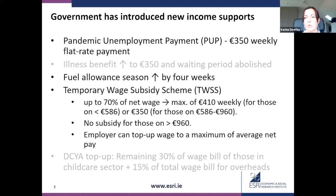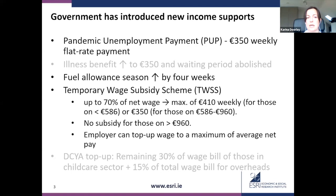The pandemic unemployment payment was introduced — a flat rate payment of around 350 euros per week to all those made unemployed directly as a result of the COVID-19 crisis. This flat payment of 350 euros per week is significantly more generous than the maximum personal rate of jobseekers benefit. In some cases, it's also more generous than what individuals were earning before they became unemployed, and that's important to keep in mind for the results.